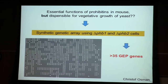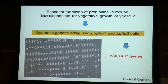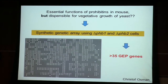Therefore, we did a synthetic genetic array looking at genes that genetically interact with prohibitins and that are essential in prohibitin-deficient cells. If there are redundant functions between two genes, maybe we learn something about the function of the prohibitins. In this screen that Christoph Osman, a former PhD student in the lab, performed, he came up with 35 genes that he named CHAP genes — for genetic interactions with prohibitins.